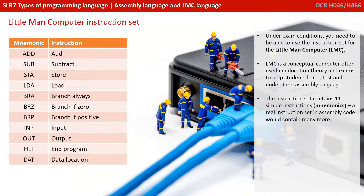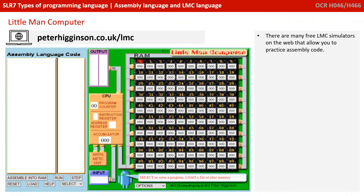The instruction set contains just 11 simple instructions, or mnemonics, which are shown on the left. A real instruction set and assembly code would contain many more. There are many free LMC simulators on the web that allow you to practise assembly code. We've provided a link here to one which we think is excellent, and the screenshots in our video will be referring to this simulator.